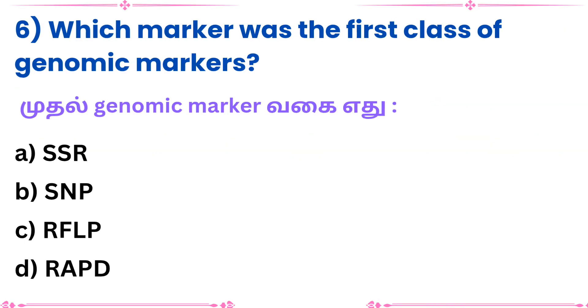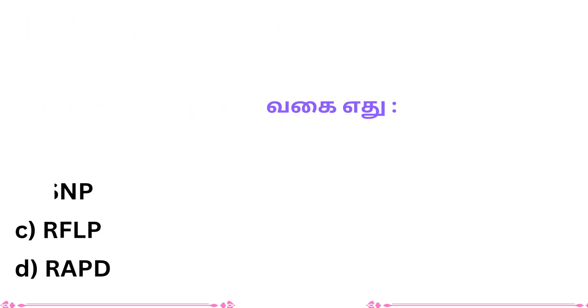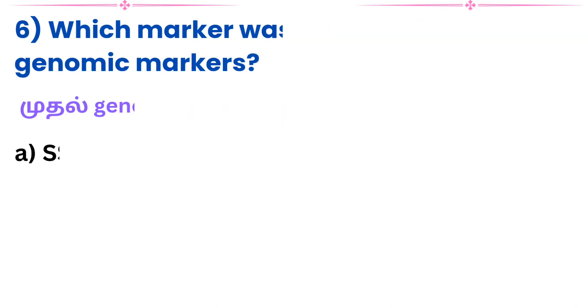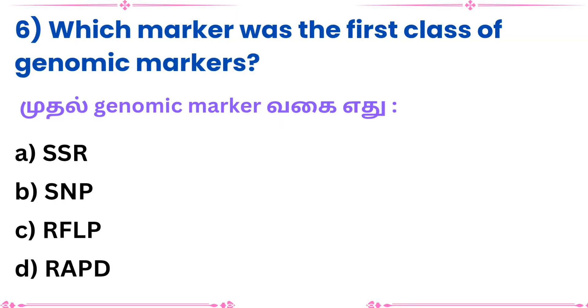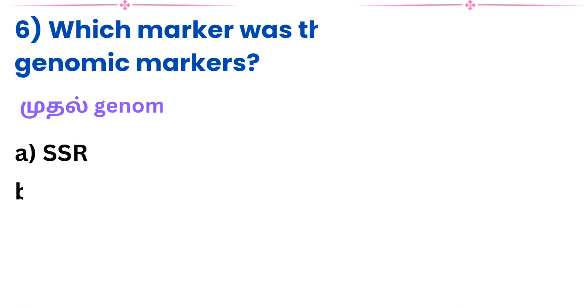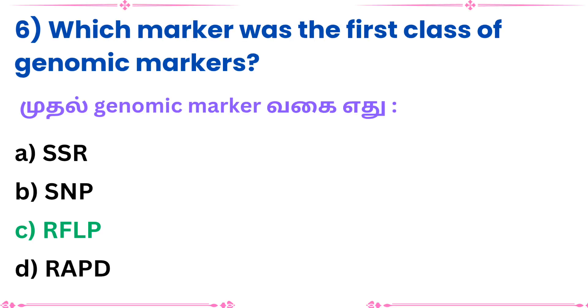Question 6: Which marker was the first class of genomic markers? Answer: RFLP.